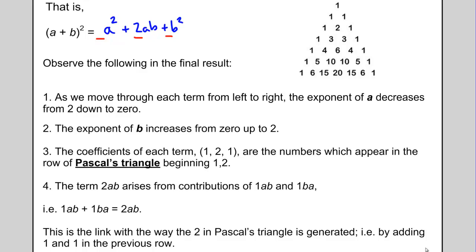We already talked about how the coefficients of each term 1, 2, 1 are the numbers which appear in Pascal's triangle beginning with row 1, 2. And finally, the term 2ab arises from the contributions of 1ab and 1ba. It's the same as how we got 2 from Pascal's triangle. It's the addition of the 1 plus the 1 from the row above it. If I know in advance that I could use Pascal's triangle, it will help me figure out the coefficients and the exponents on the a and b terms.